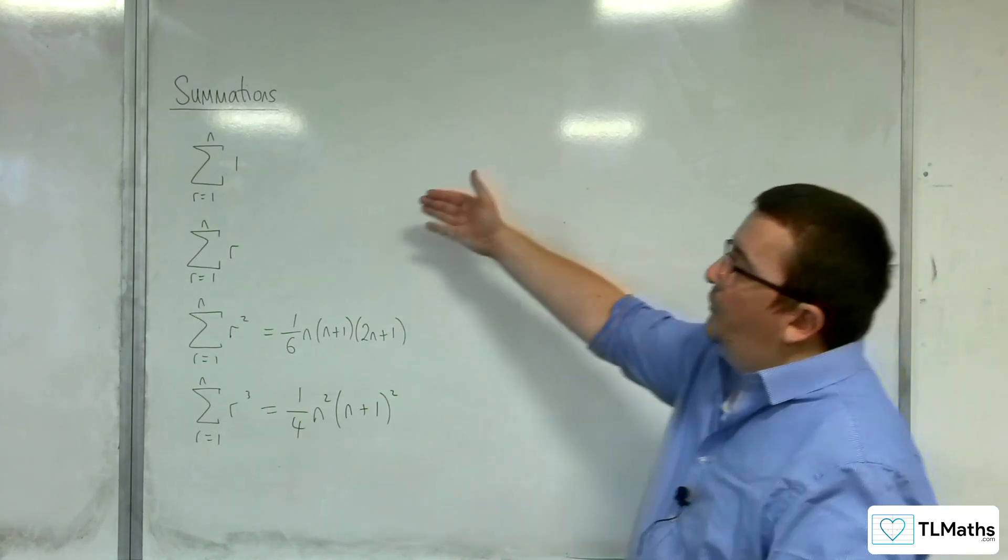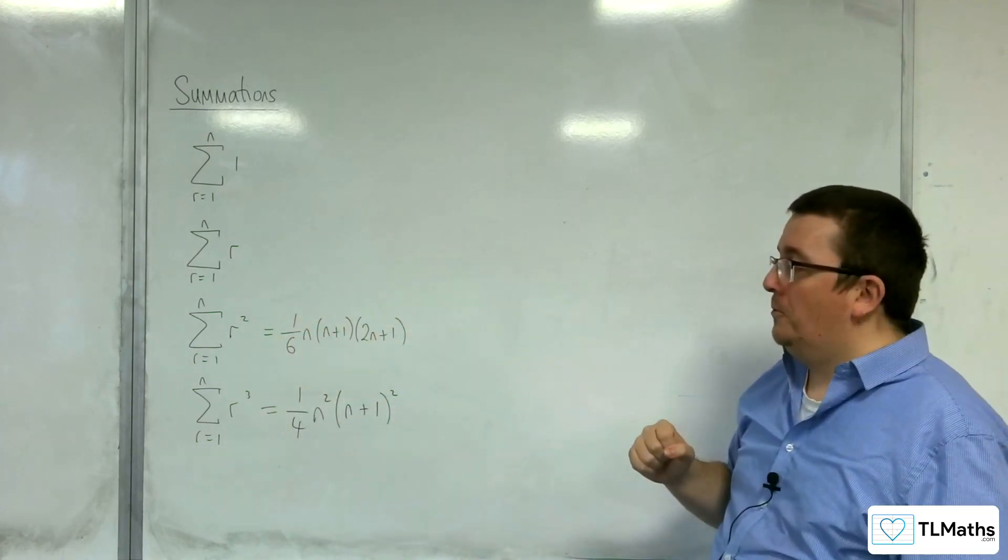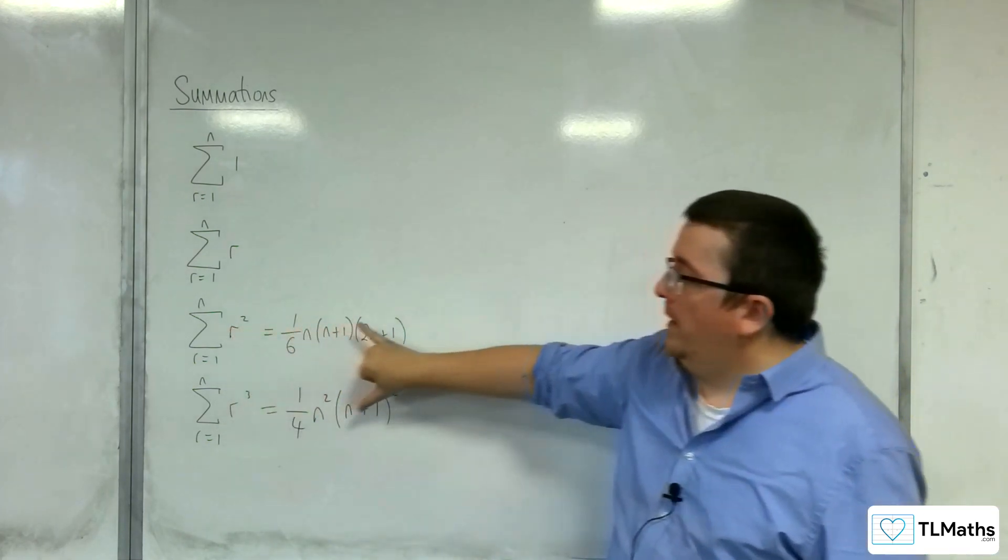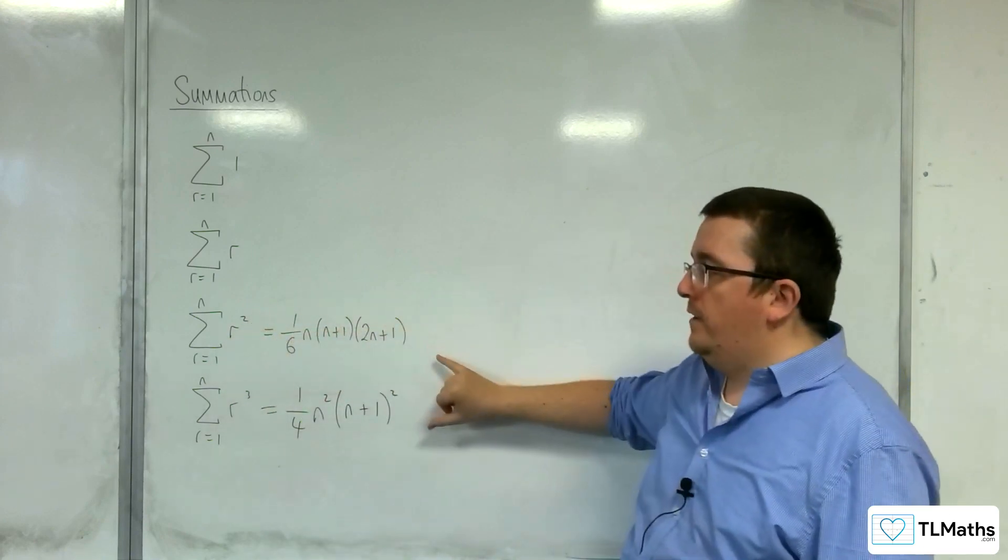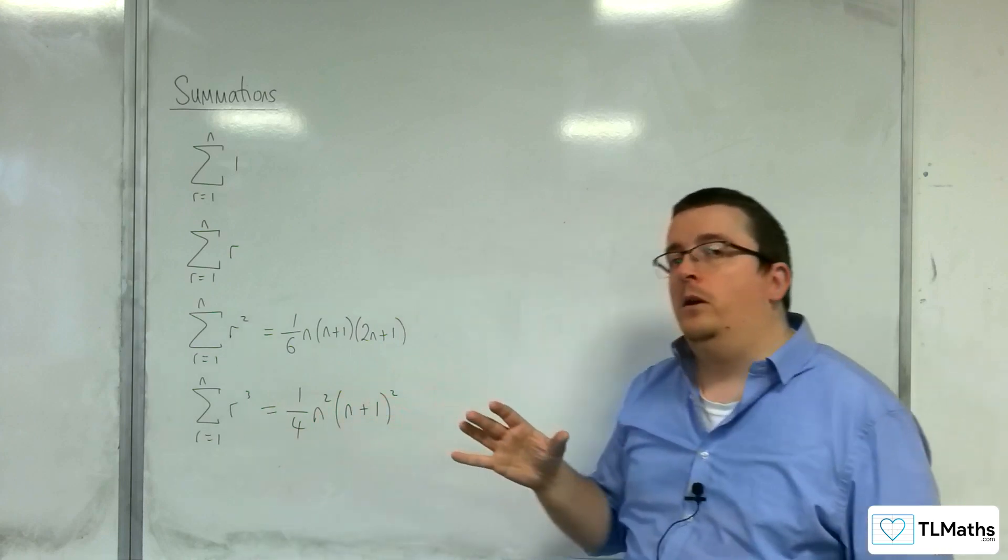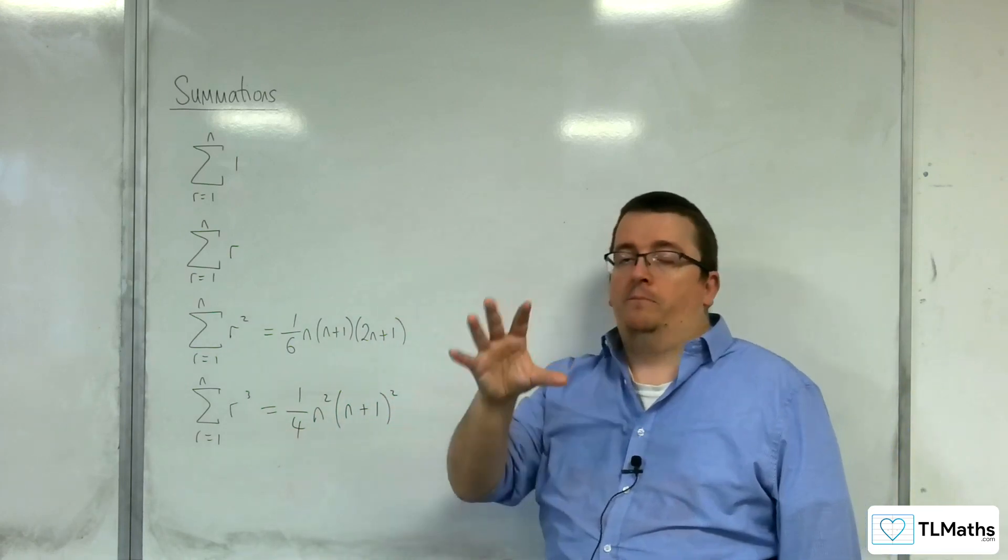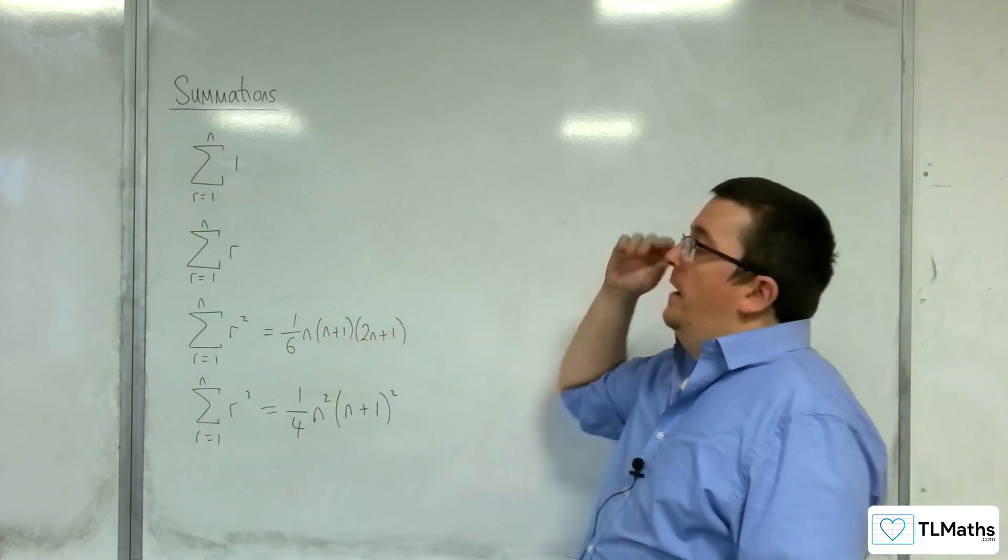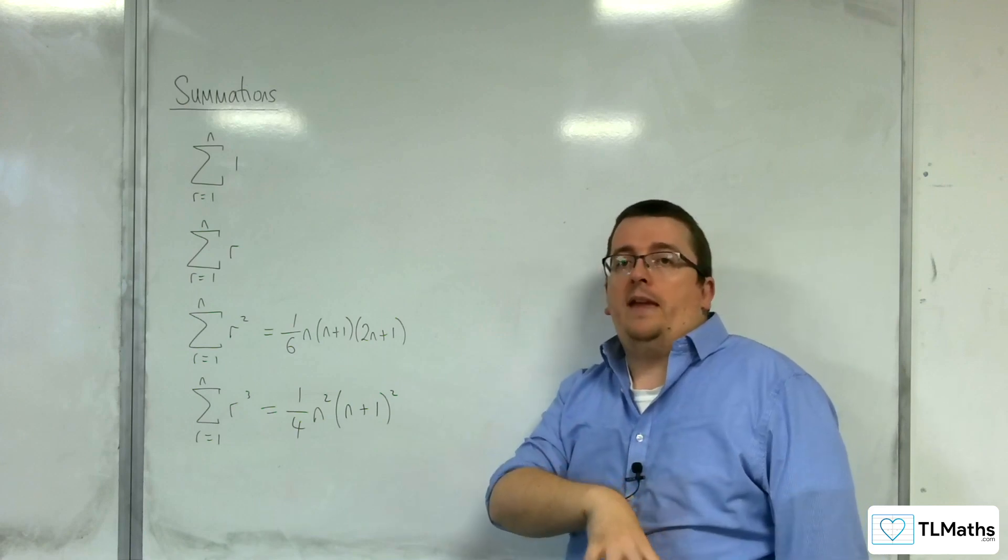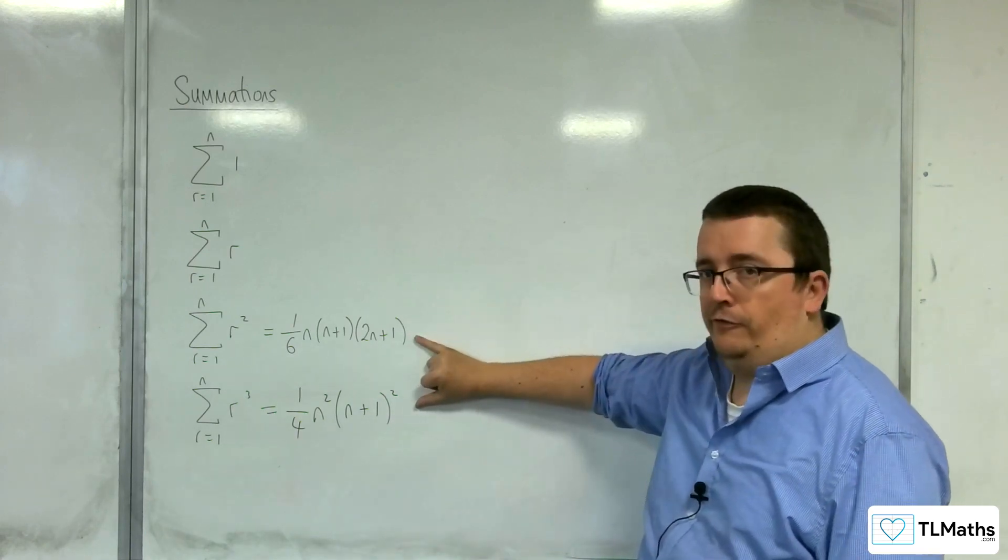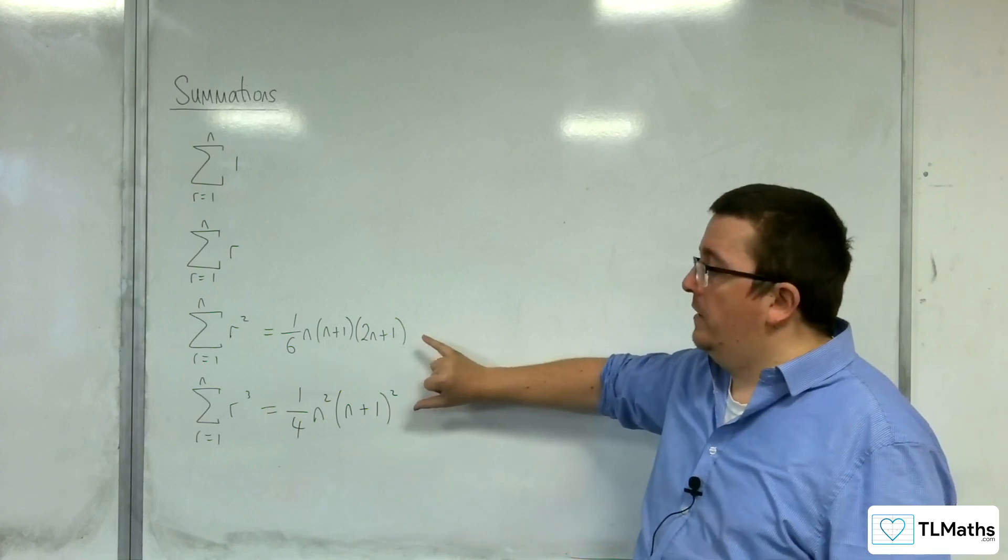These are the four we're going to need to be able to work with. These two I have written down immediately. These two you are given in the formula booklet regardless of whether you're doing, in the UK exams, English exams - Edexcel, AQA, OCR A and OCR B MEI - all have these in their formula booklet. So you don't need to memorize those. They are given to you.